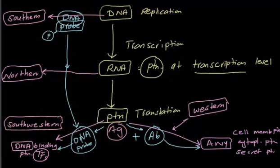So basically all of them — Southern, Northern, Southwestern — all use a DNA probe. The only exception is any types of protein: cell membrane protein, cytoplasmic, secretory. In that case, you will add antibodies, you will get an antigen-antibody agglutination response, and this is basically Western blot.